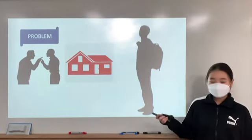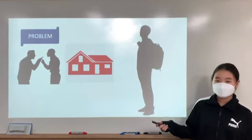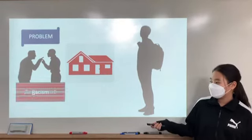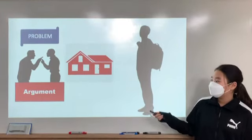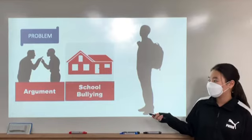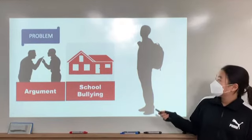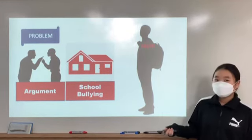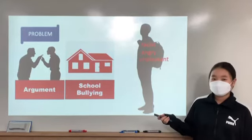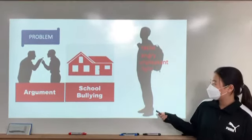First, I will tell you about why racism is a problem in our society. If racism happens, it can lead to an argument. If it happens at school, it can naturally lead to school bullying. If someone is racist to me, I will be very angry and unpleasant. I think they can make a fight or a big problem.